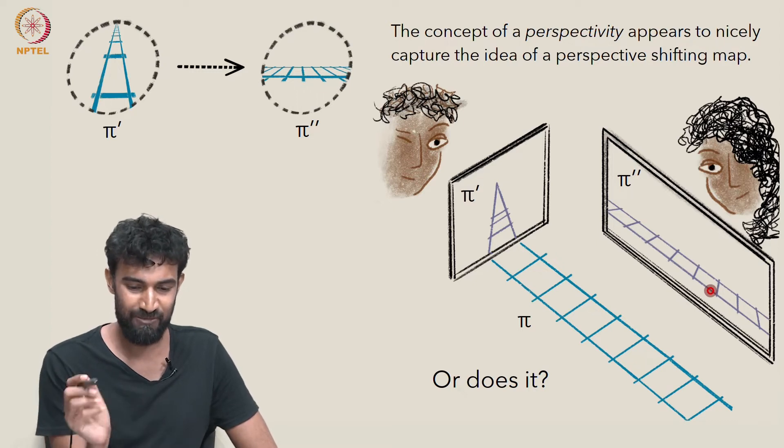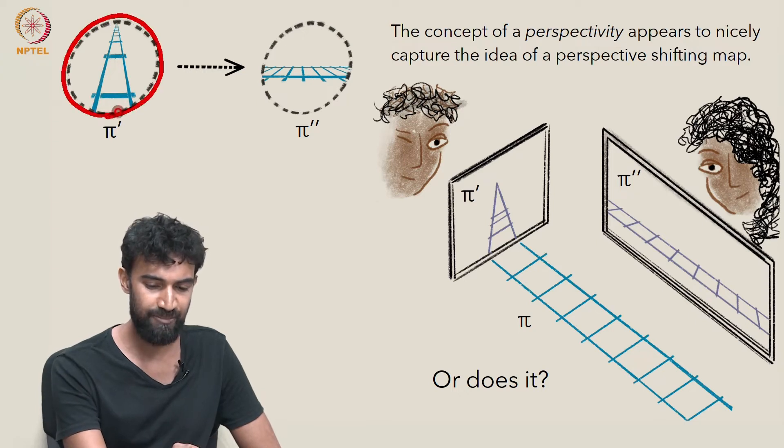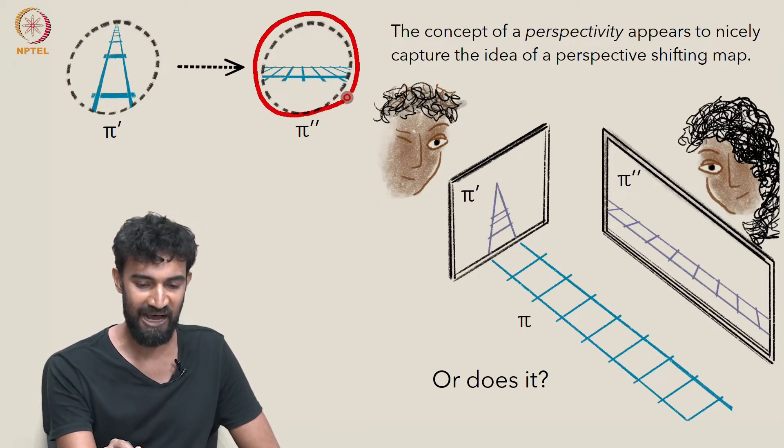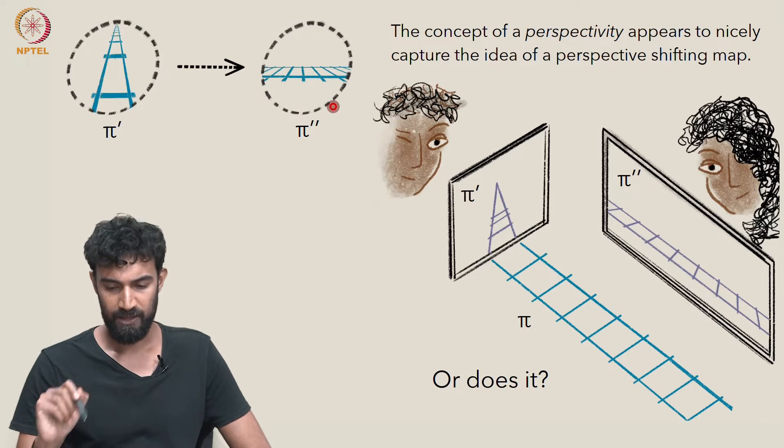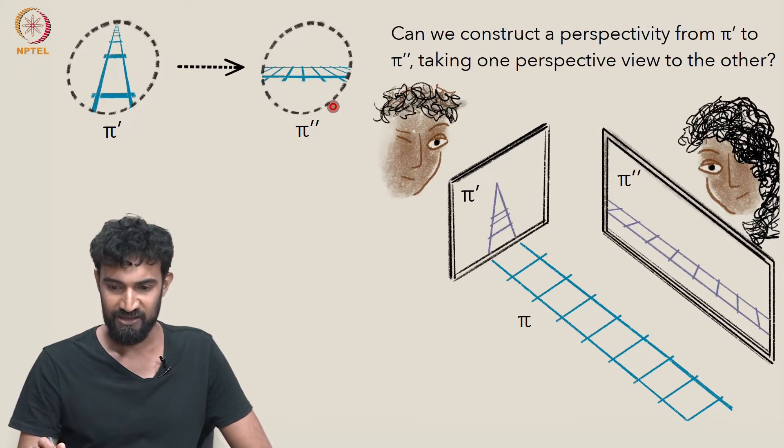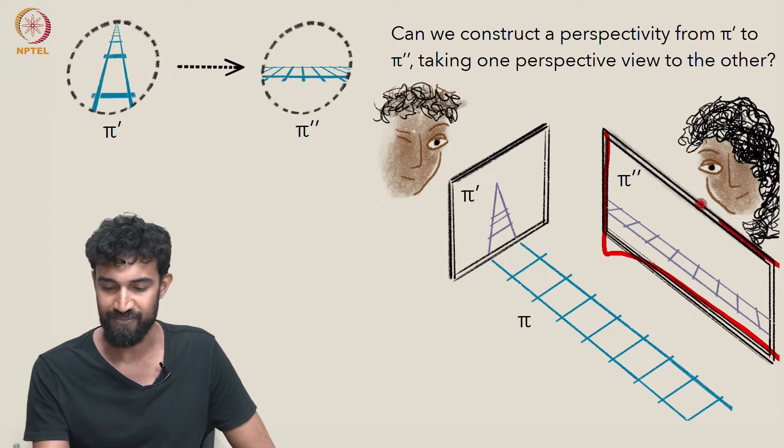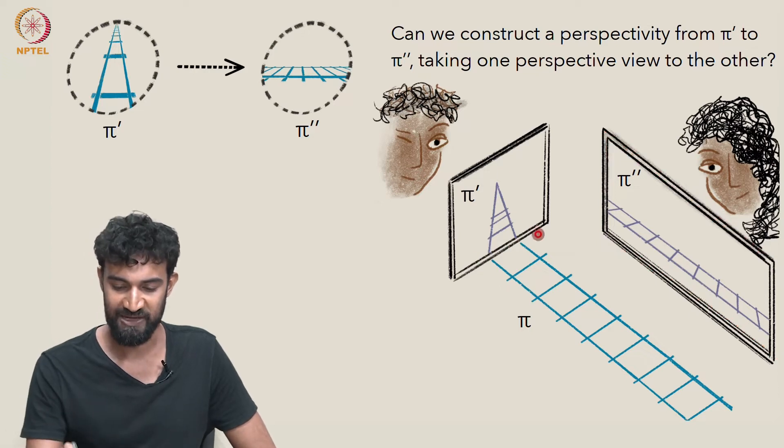And can we create a perspectivity mapping the perspective view in π′ to the perspective view in π″? In other words, can we construct a perspectivity from the plane π′ to the plane π″, taking this perspective view to this one?